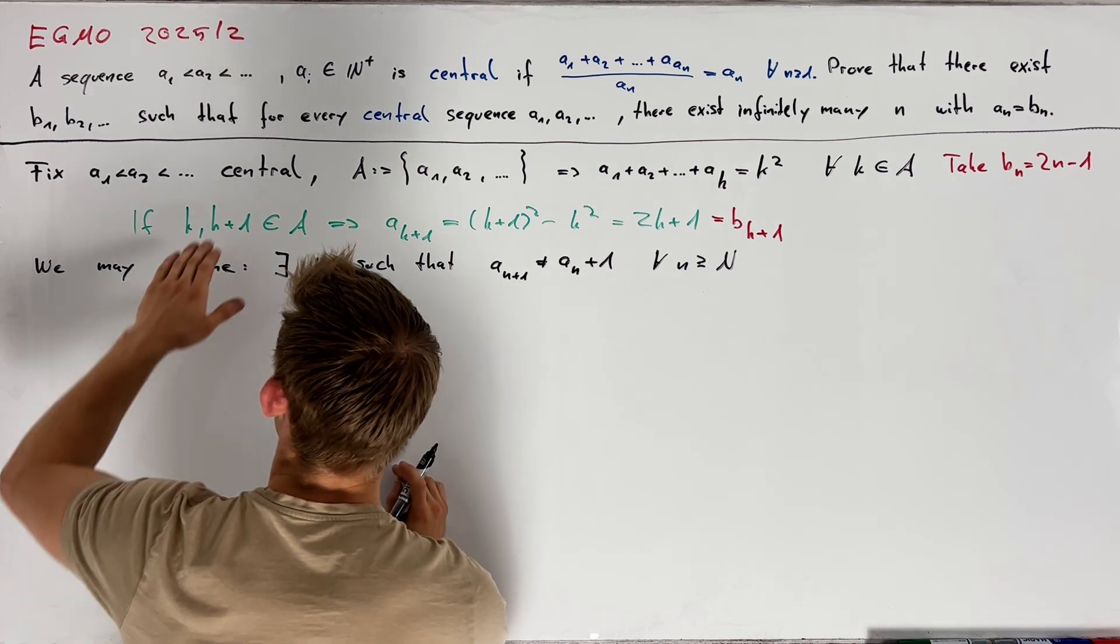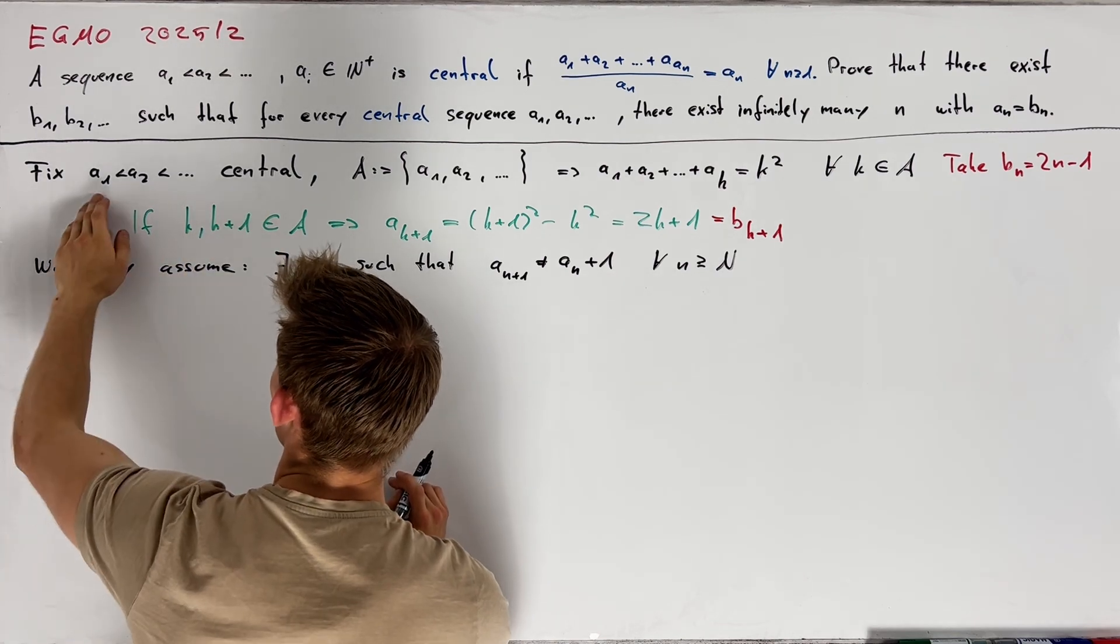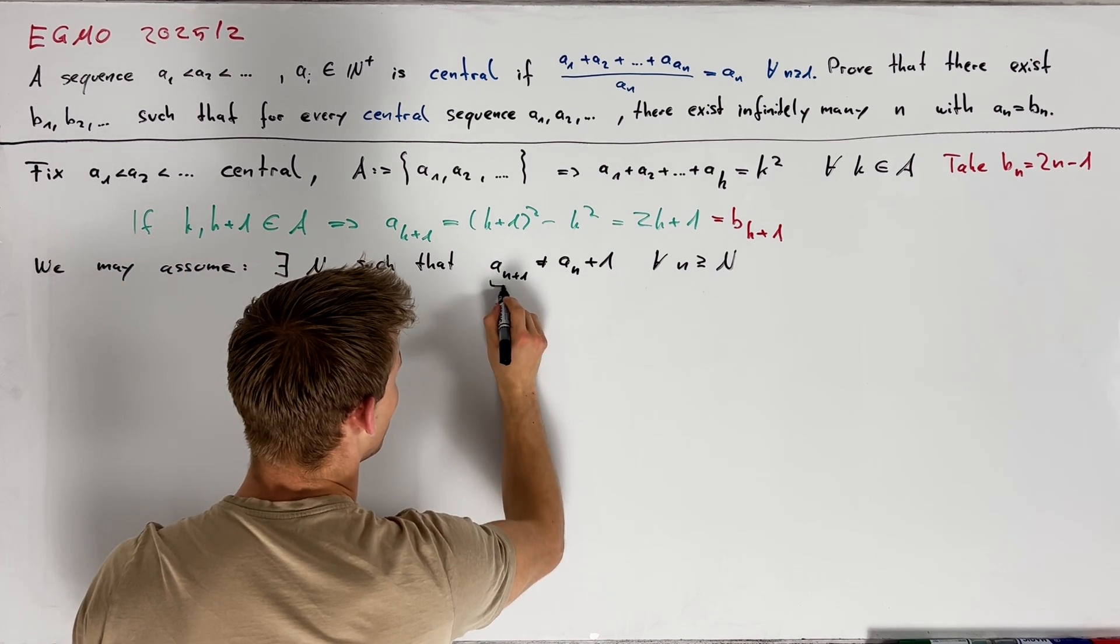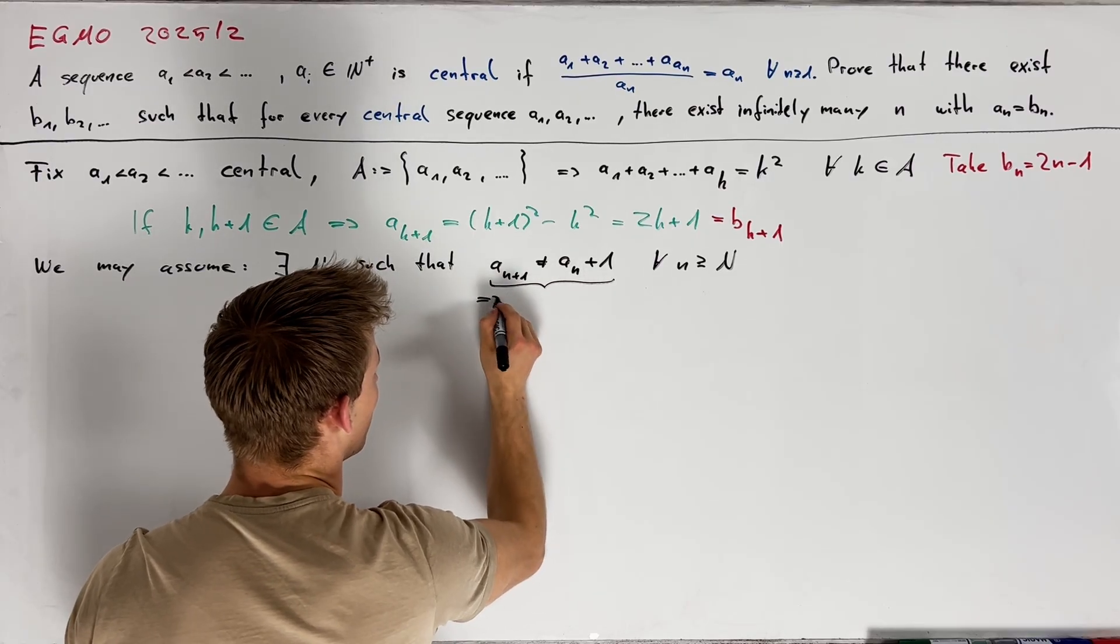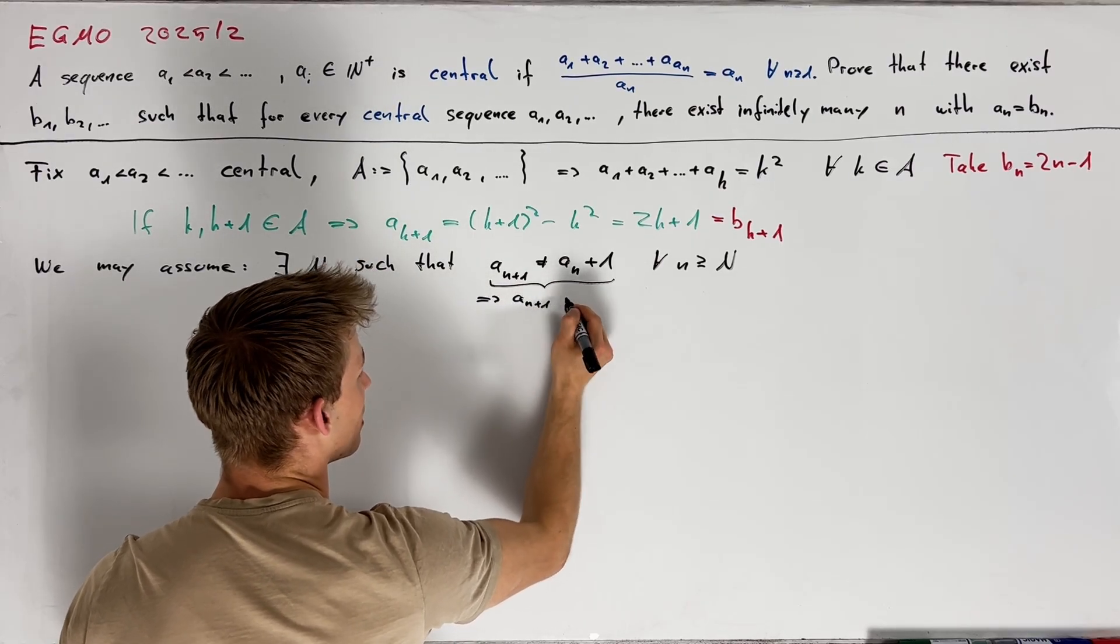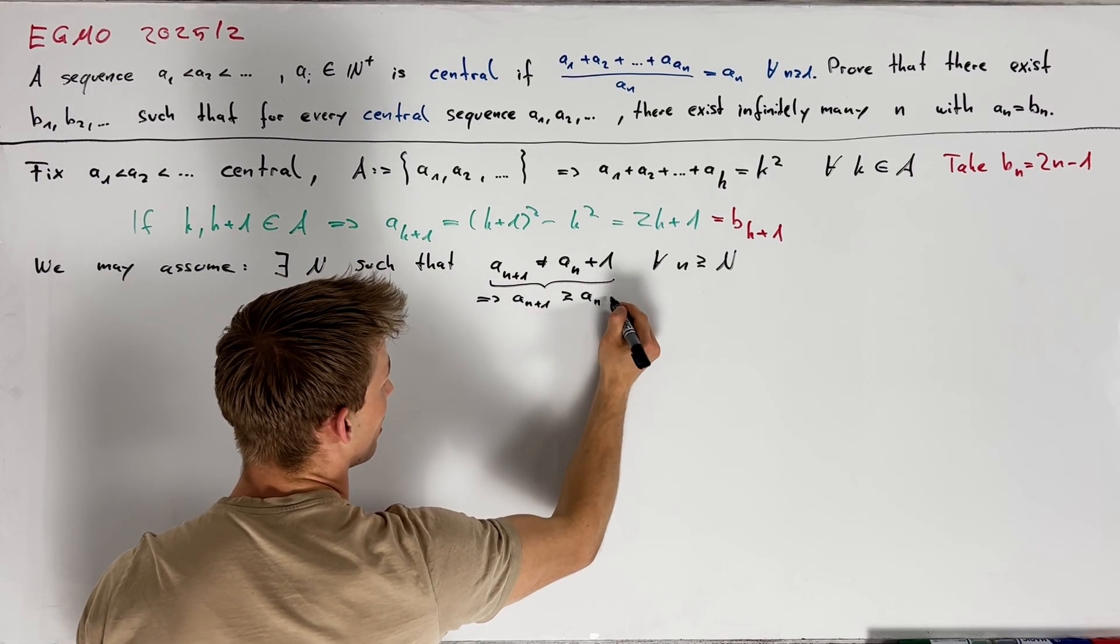Using the fact that central sequences are strictly increasing sequences of positive integers, this inequality implies a_{n+1} is greater than or equal to an plus 2.